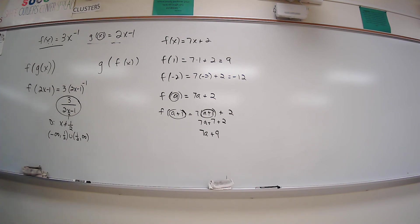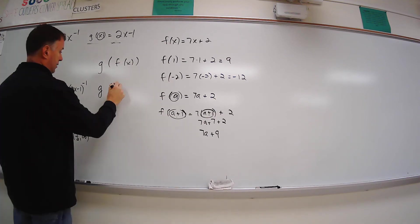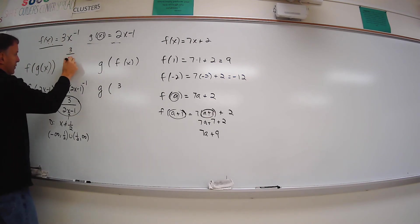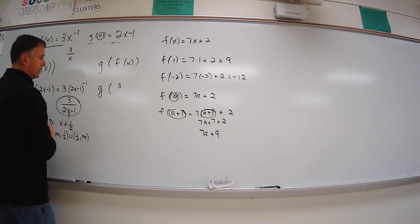Next one. g of f of x. g of f of x, I'll define g of whatever f of x is. That's 3x. And you know what? You know what I can do with that? I can write that as 3 over x. I can write that as 3 over x. That's what I'm going to do.